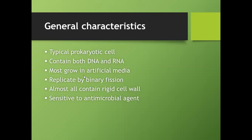In terms of reproduction, bacteria replicate by binary fission — simply division. Binary fission is an important type of reproduction that enables bacteria to grow very fast. Almost all bacteria contain a rigid cell wall — we say almost because not all of them do. There is a different classification of bacteria called mycoplasmas, and those ones do not have a cell wall.